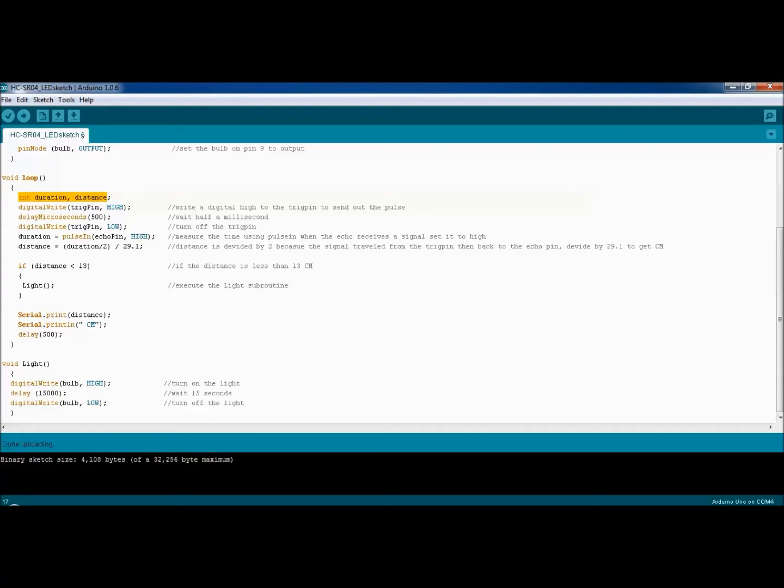We activate the trigger pin to high so it will start sending out the signal. We wait about half a millisecond and then turn it back off. By doing so, it keeps pulsing, sending out signals every half a millisecond or so. All that information sent out by the trigger pin needs to be collected by the echo pin using the pulsing command. We take that information received by the echo pin and put it in the variable we set before, the duration, and we set the echo pin to high.